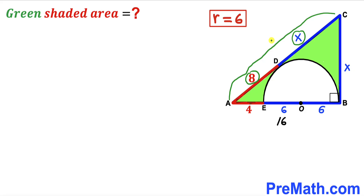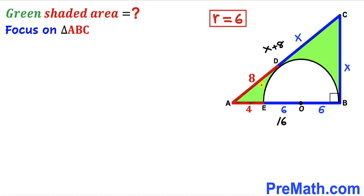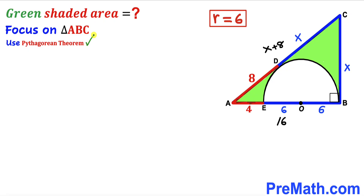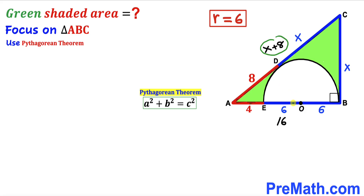We now focus on the big right triangle ABC and apply the Pythagorean theorem to solve for X. The hypotenuse is (X + 8), and the two other legs are X and 16. Let's fill in the Pythagorean formula.